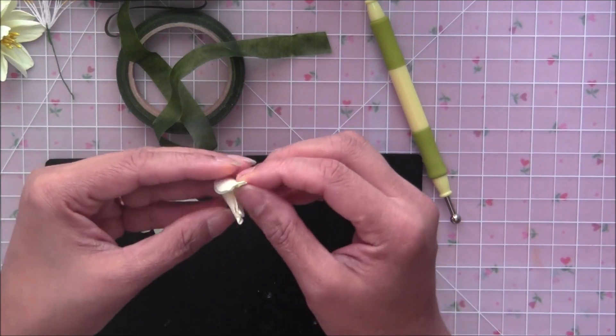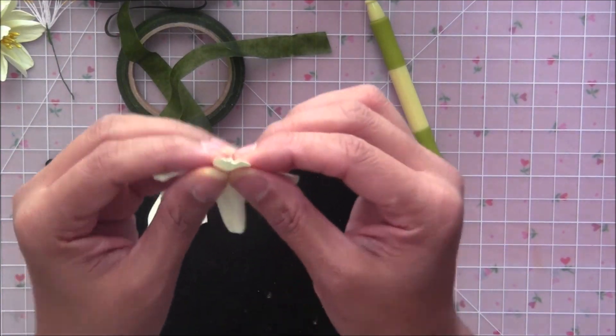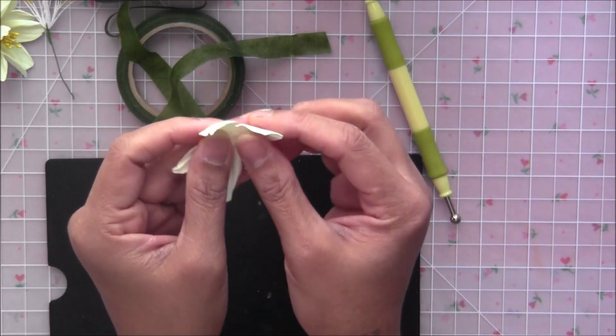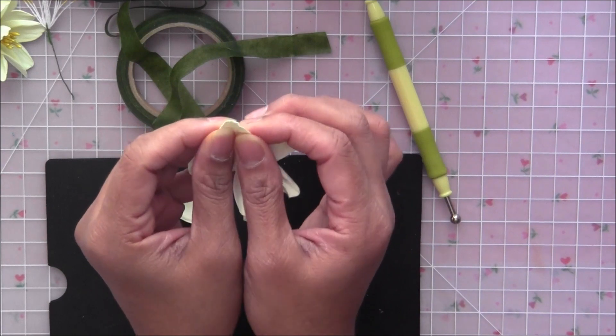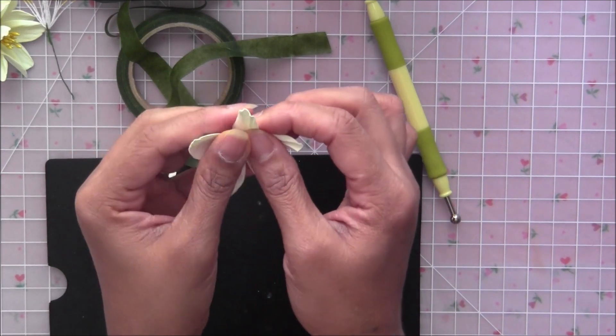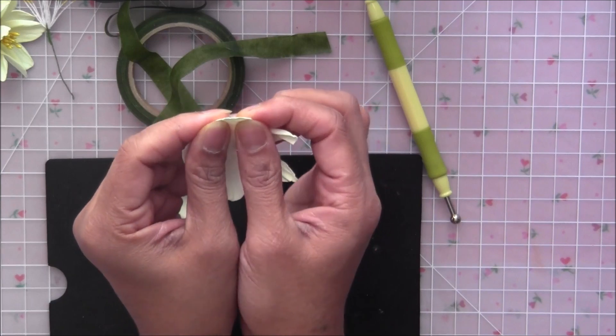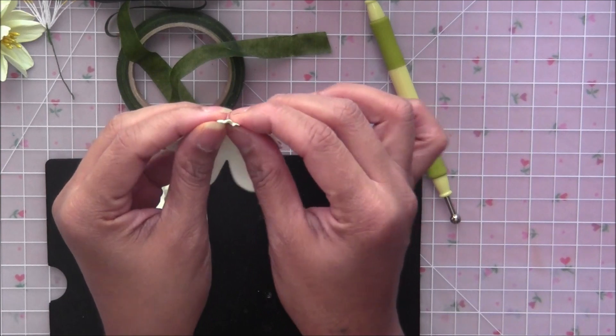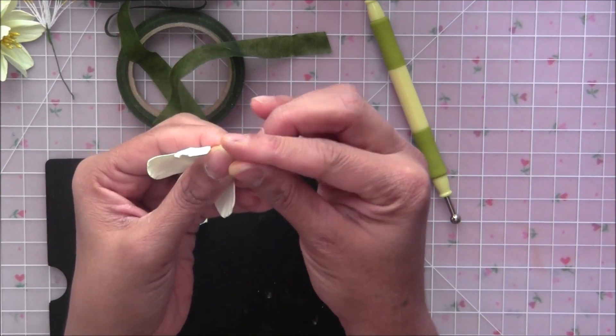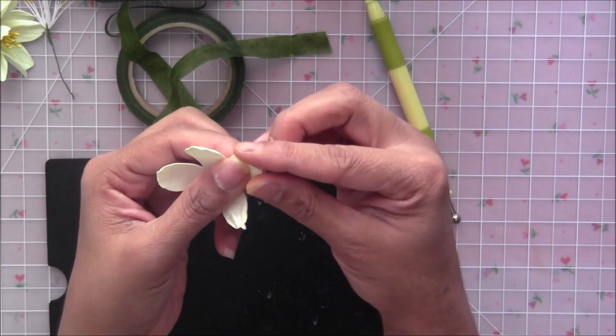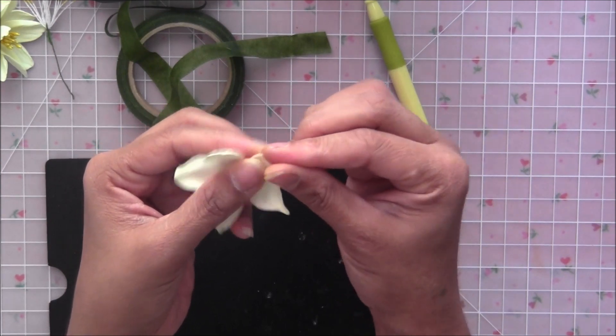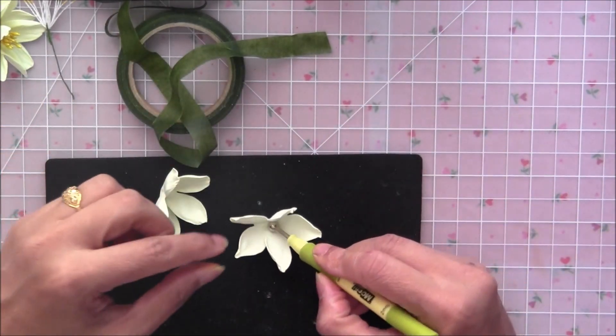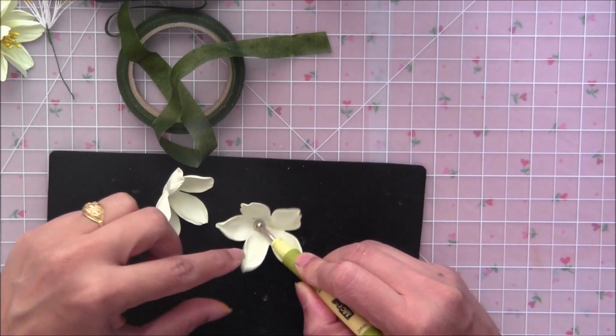And then next petal we are doing the same step. Just gently open it like that, like that, okay. And then again make these tips in proper shape, okay. And then use the tool and make a cup shape in the middle.